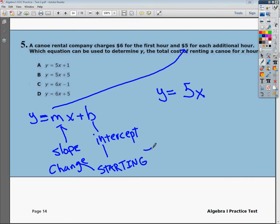The next part is what represents where we start. Well, we start out at $6. That's what we pay, whether we use it for one hour or two hours or three hours or whatever. We're always going to pay $6 in the beginning. Now, if I put plus 6 here on the end, you can see in the first hour that would mean that I'm going to pay $11.